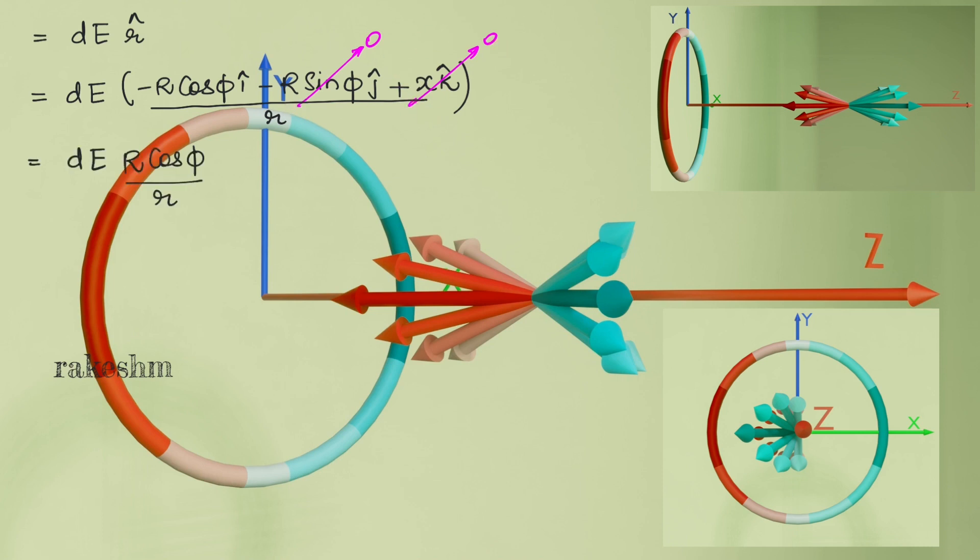We can say that the net field at that point will be integral dE cos phi by r. Total field will be integral k dq by r square r cos phi by r.